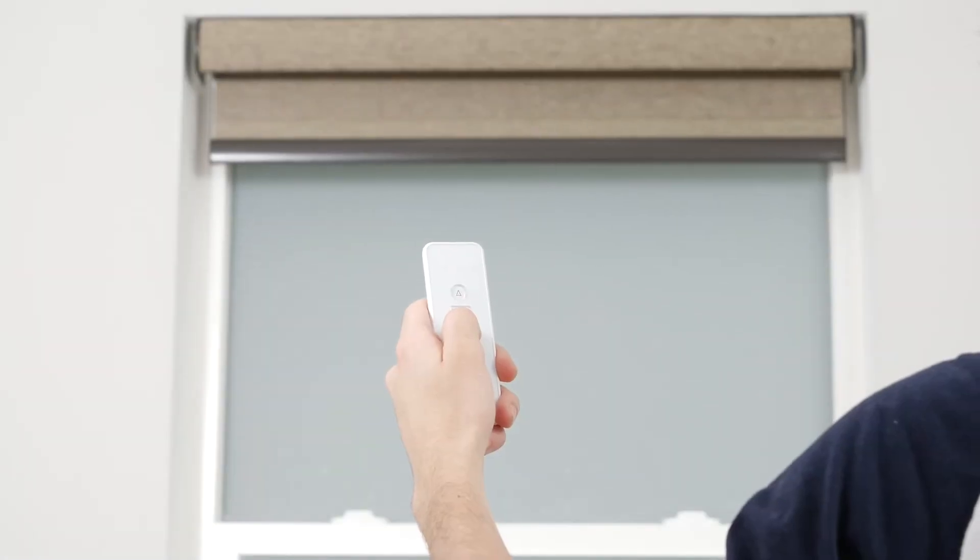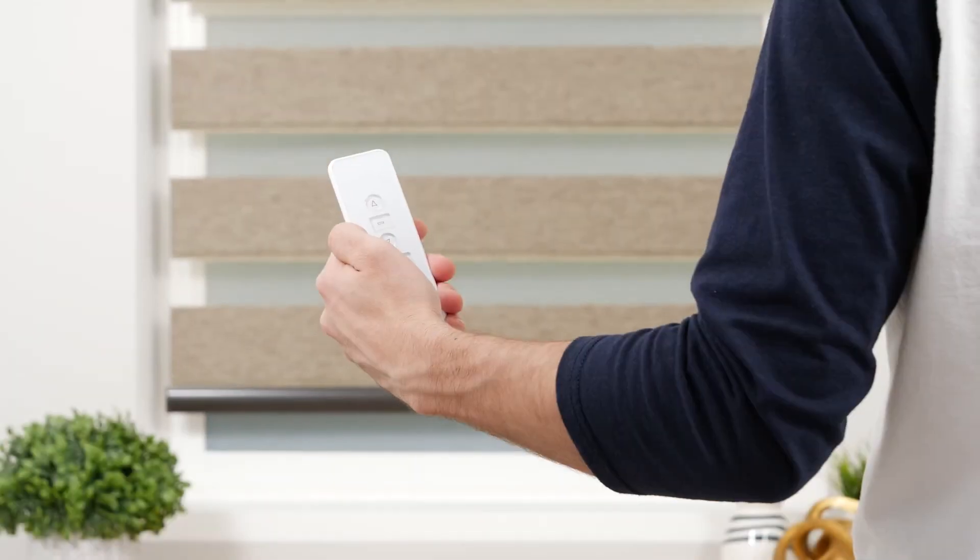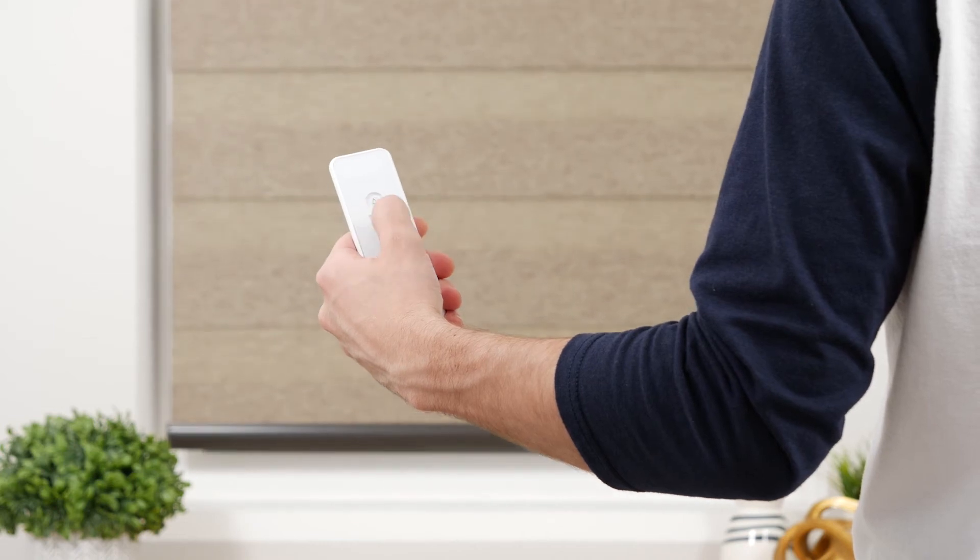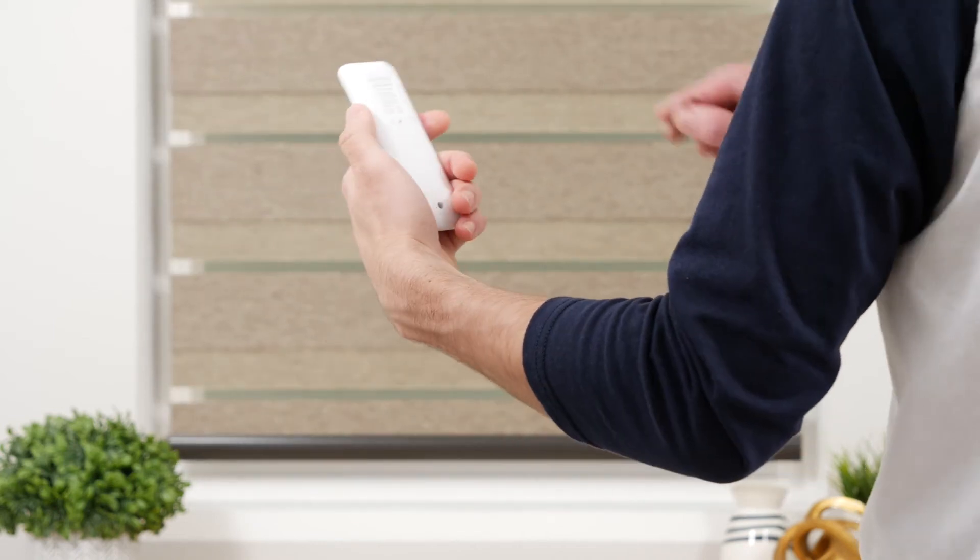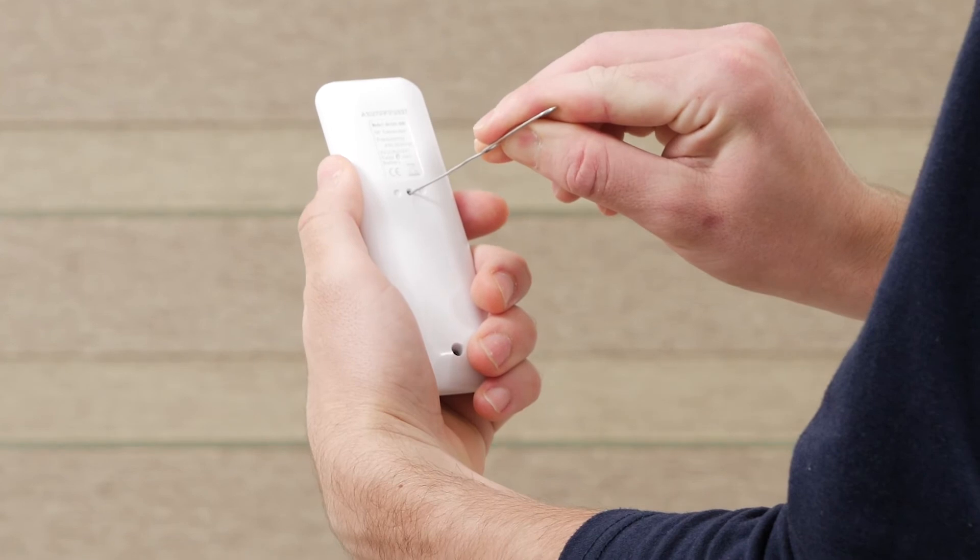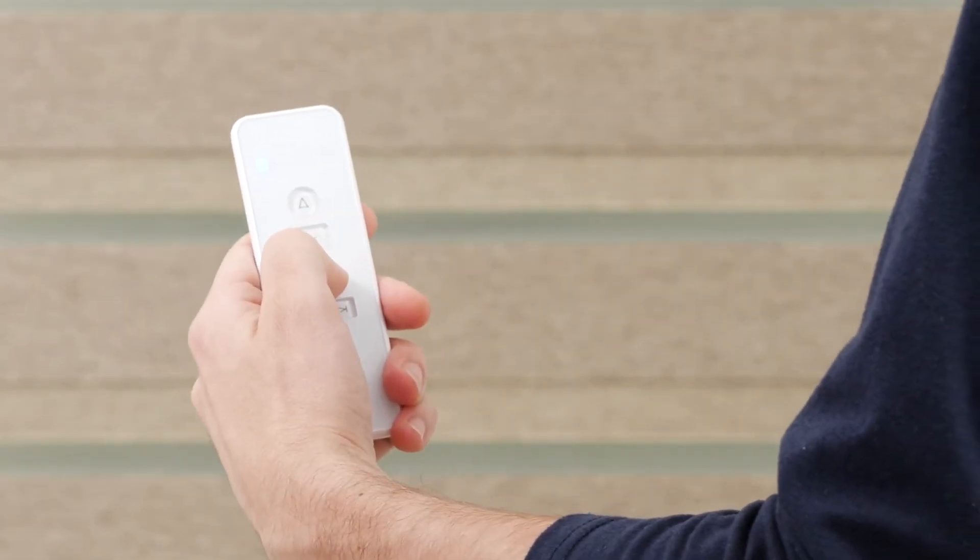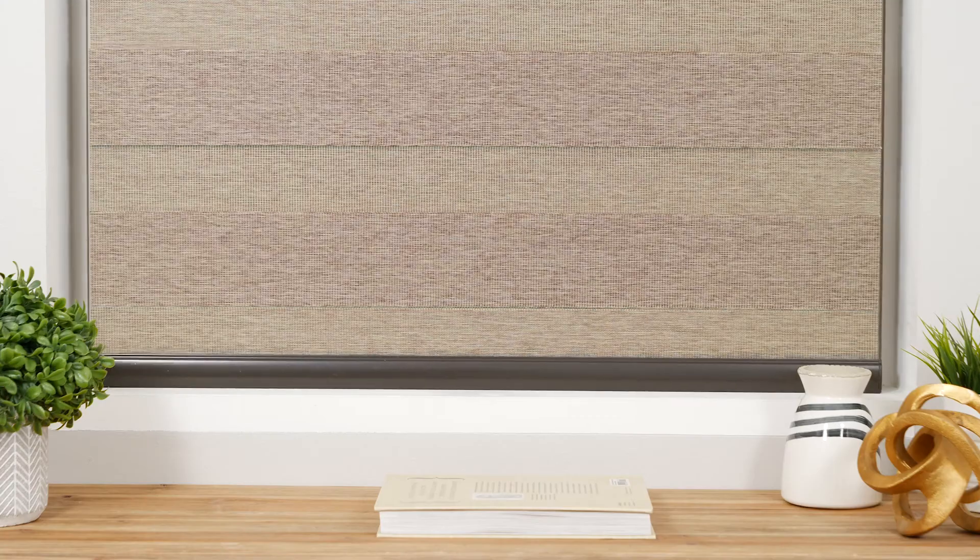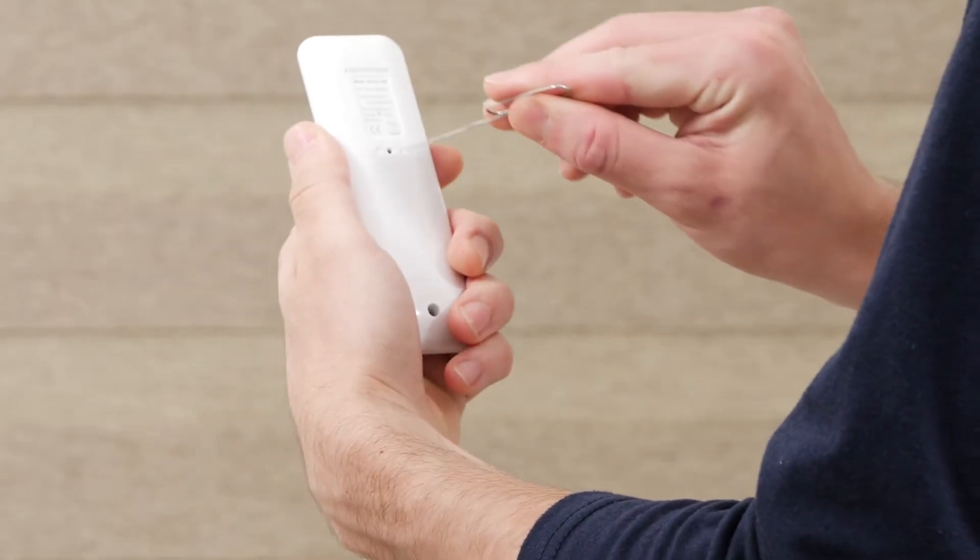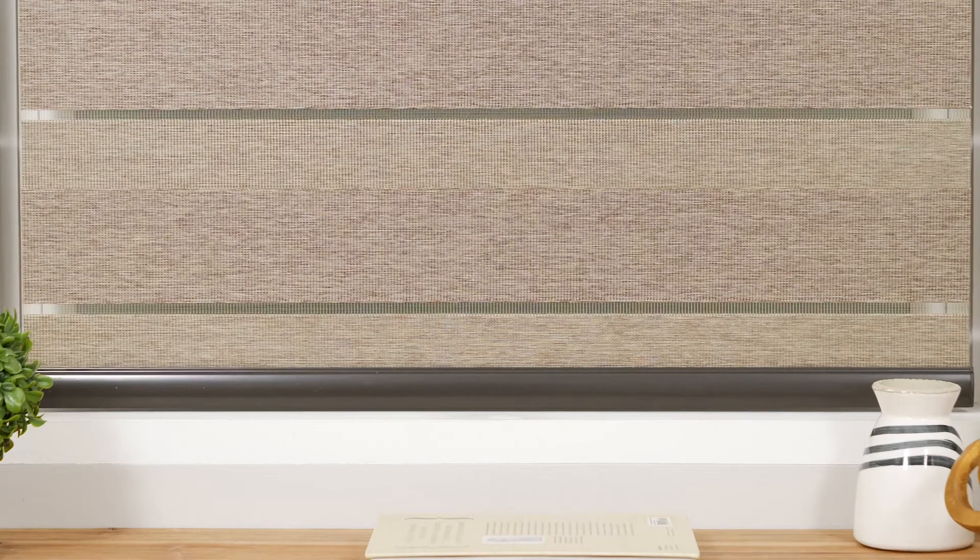To set a new bottom limit, position the shade about six inches above the desired lower limit. Press the program button on the back of your remote until the shade jogs. Then tap the down button repeatedly until the shade is set at the new bottom position. Press the program button again and the shade will jog to confirm that the lower limit is saved.